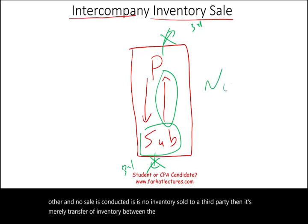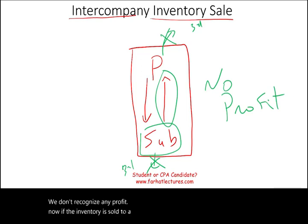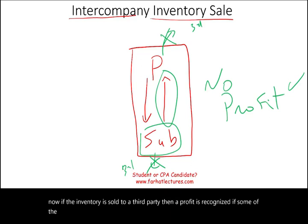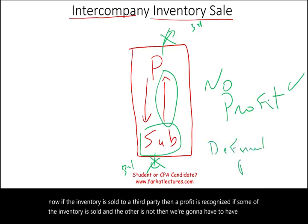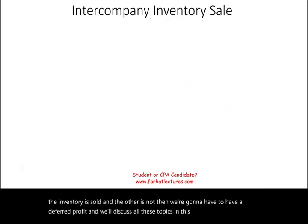As a result, we don't recognize any profit. Now, if the inventory is sold to a third party, then a profit is recognized. If some of the inventory is sold and the other is not, then we're going to have a deferred profit. We'll discuss all these topics in this session.